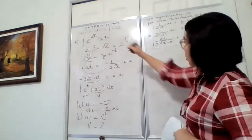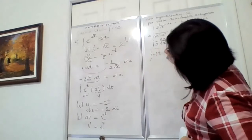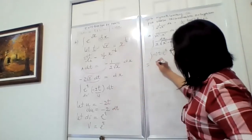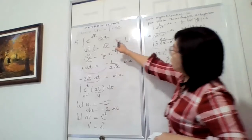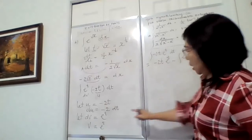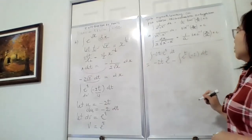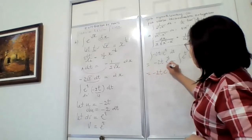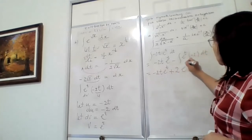Following the formula ∫u dv: our u is −2t and our dv is e^t. This equals u·v minus ∫v·du. Our u is −2t, our v is e^t, and our du is −2 dt. So we get −2t·e^t minus ∫e^t·(−2)dt, which equals −2t·e^t minus (−2)e^t, giving −2t·e^t plus 2e^t plus C.